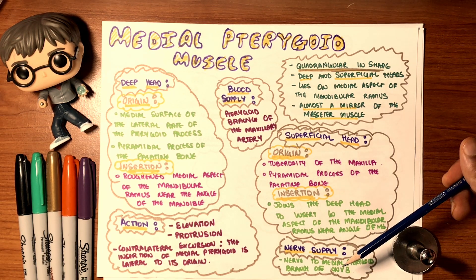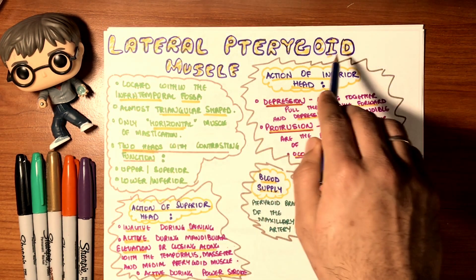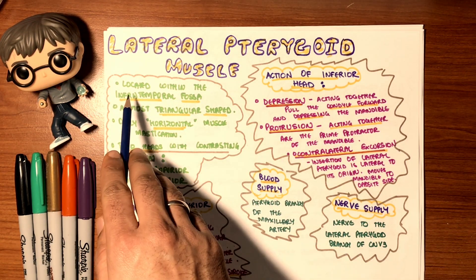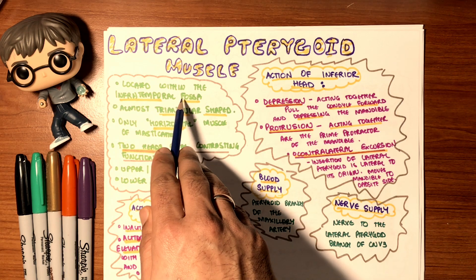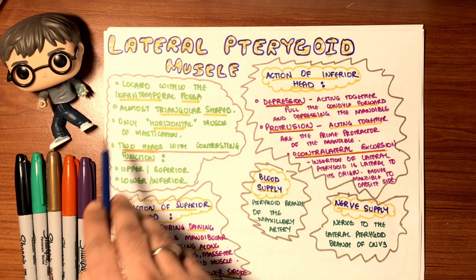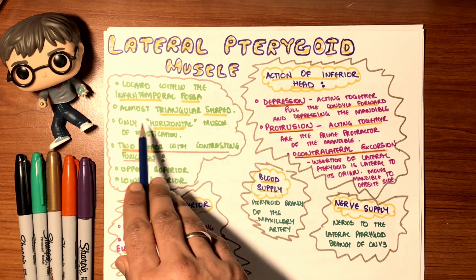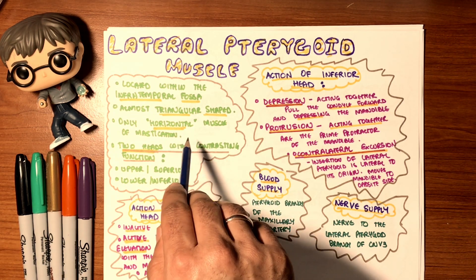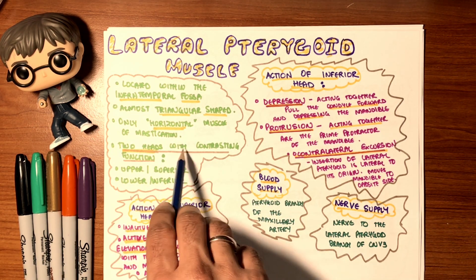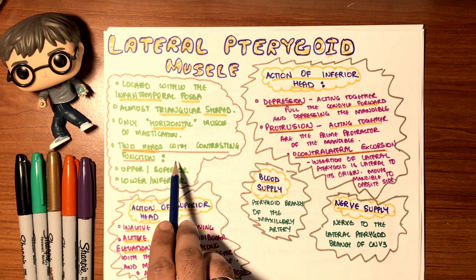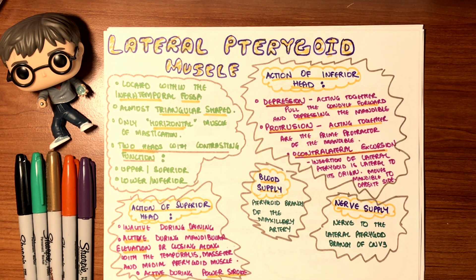The lateral pterygoid is the last muscle of mastication. It is located within the infratemporal fossa and is almost triangular in shape. It is the only horizontal muscle of mastication. It has two heads with contrasting functions — superior and inferior.